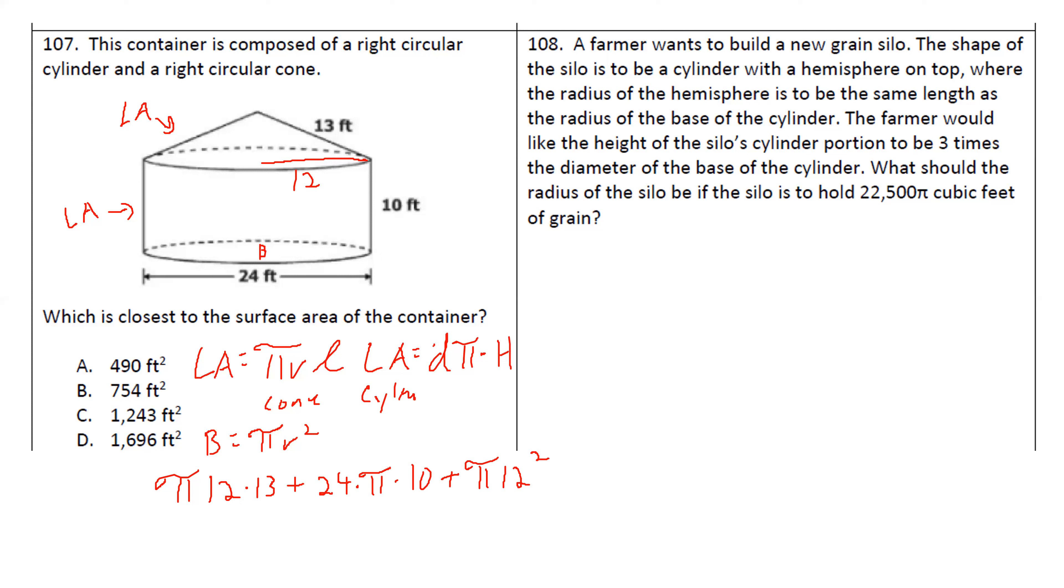So we have 12 times 13, 156 pi. We have 24 times 10, which is 240 pi. And we have 12 squared, which is 144 pi. Add all those up. That's 540 pi times pi, which rounds out to D.